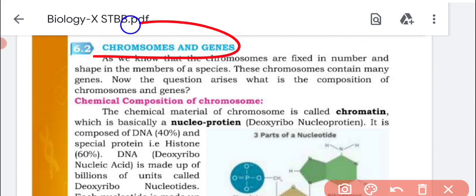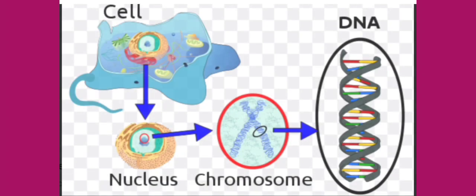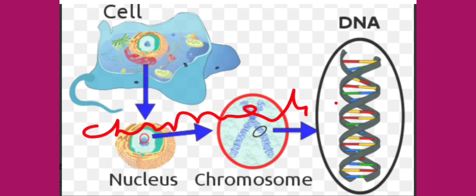Let's start with chromosomes and genes. First the introduction, then we will see further information. Looking at the location, from class 9 we know the cell has organelles including the nucleus. If we look at the structure of the nucleus, we see a thread-like material called the chromatin network.